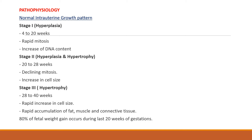Regarding pathophysiology, normal intrauterine growth occurs in three stages. The first is the stage of hyperplasia between 4 to 20 weeks, with rapid cellular growth and increase in DNA content. The second stage, between 20 to 28 weeks, involves both hyperplasia and hypertrophy — increase in both cell number and cell size. The third stage, hypertrophy, occurs between 28 to 40 weeks, with increase in cell size but no further cell multiplication, and rapid accumulation of fat, muscle, and connective tissue. 80% of fetal weight gain occurs during the last 20 weeks of pregnancy.